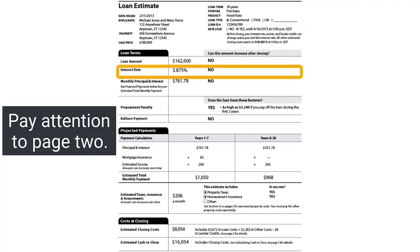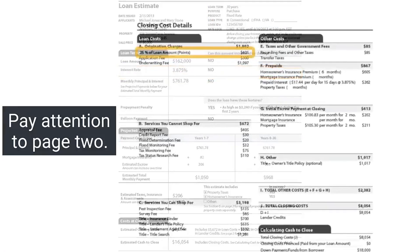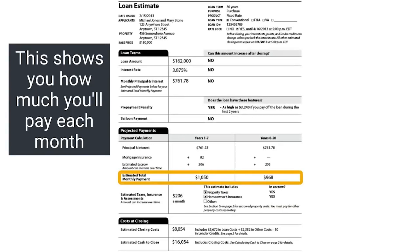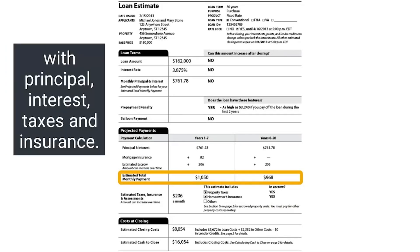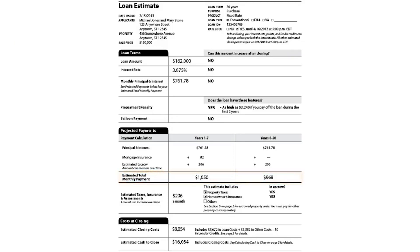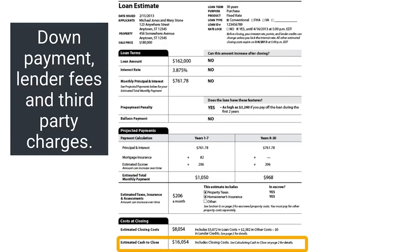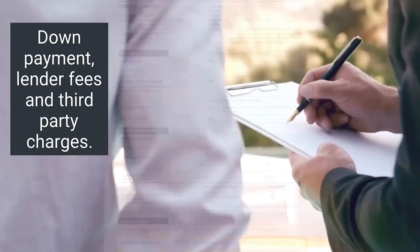Look at the interest rate, but also pay attention to page 2, which shows how much you have to pay in the form of points to get that rate. Review your estimated total monthly payment, which shows how much you'll pay each month with principal, interest, taxes, and insurance included. Finally, look at estimated cash to close — this number shows how much money you actually need upfront, including your down payment, as well as lender fees and third-party charges.